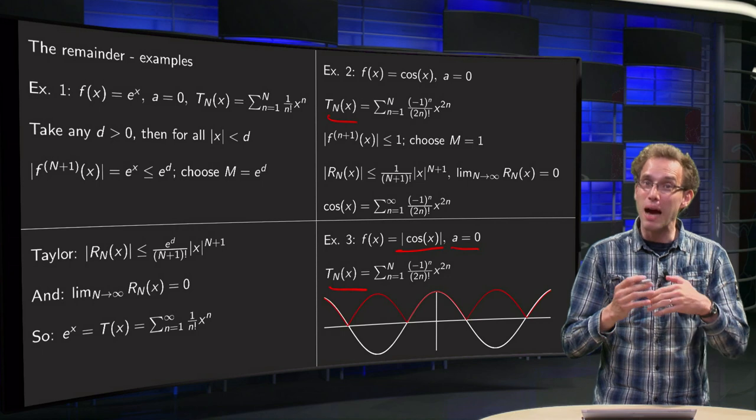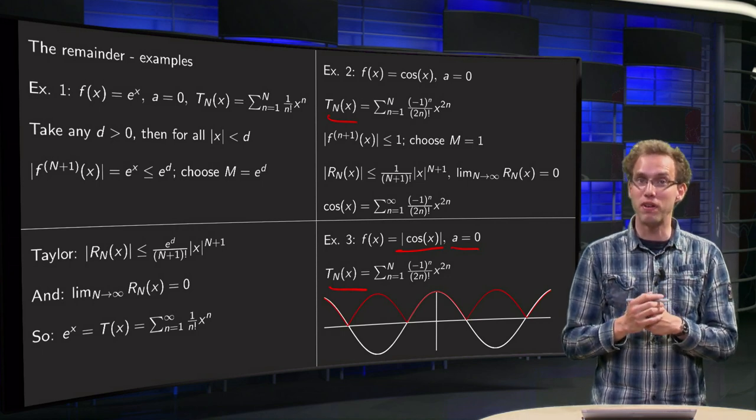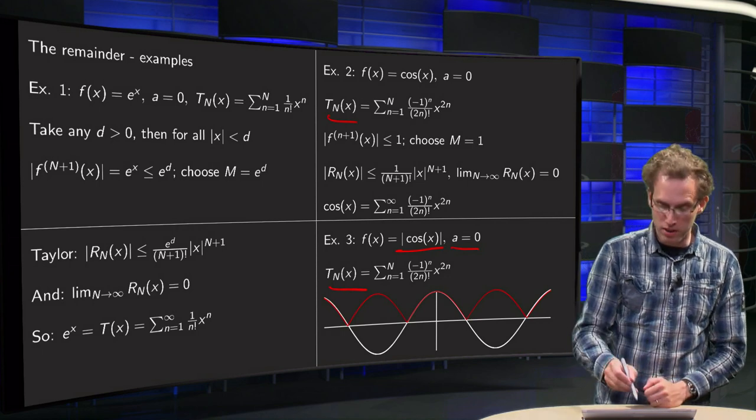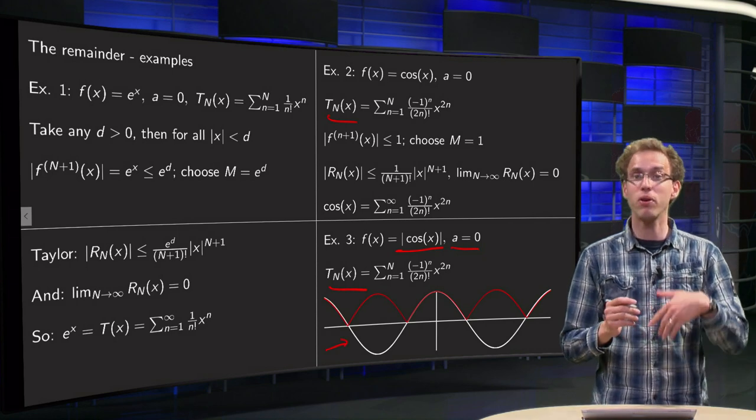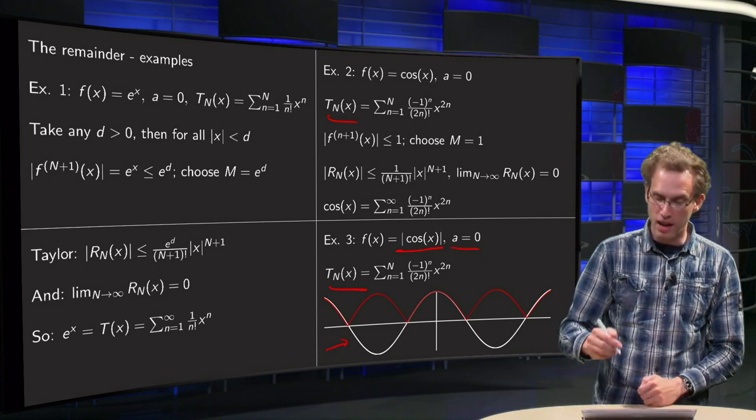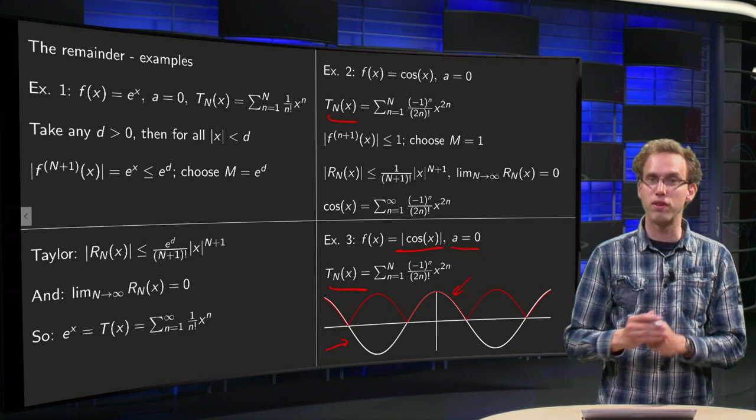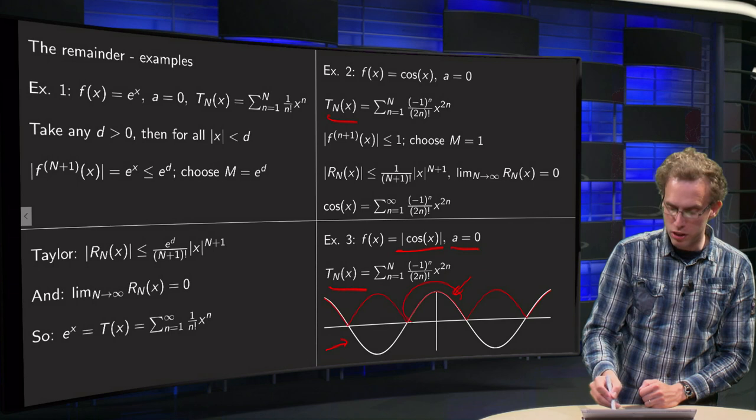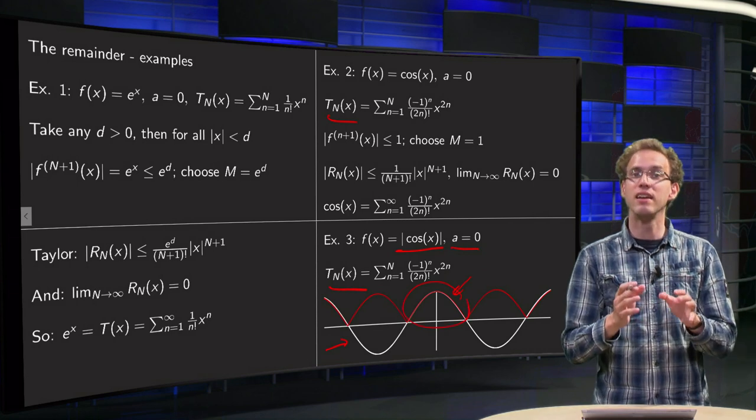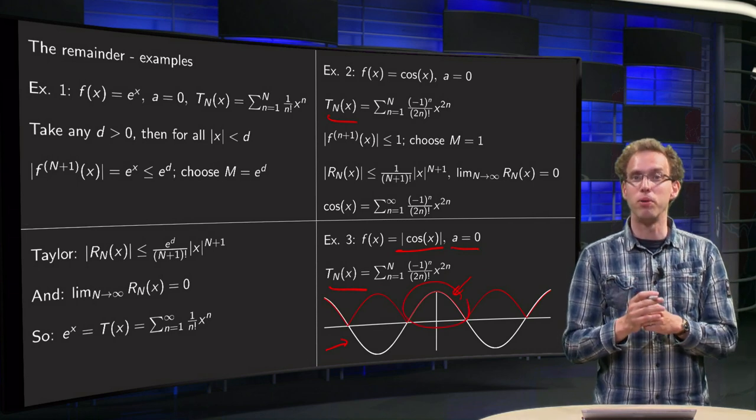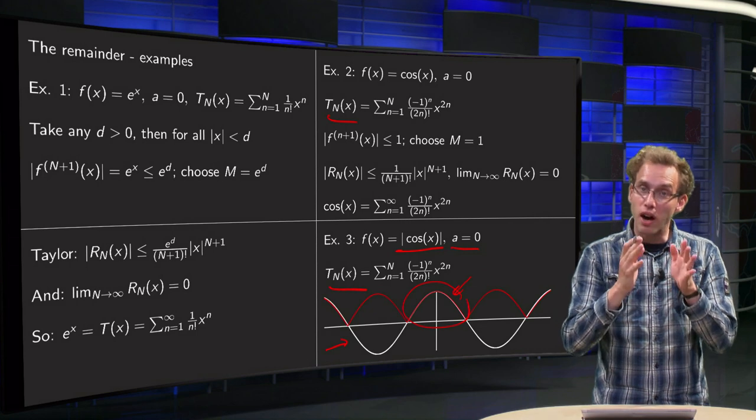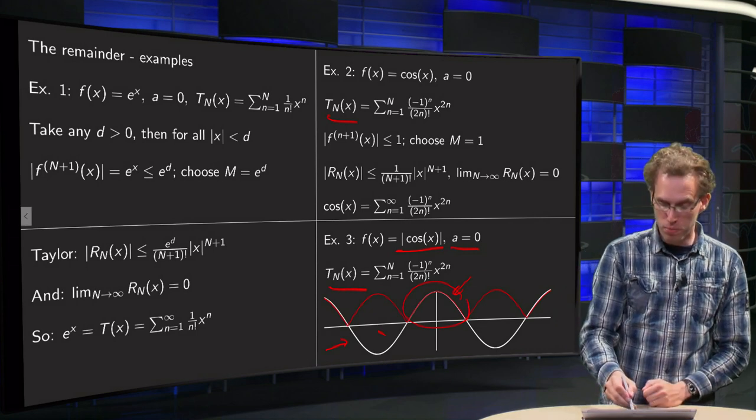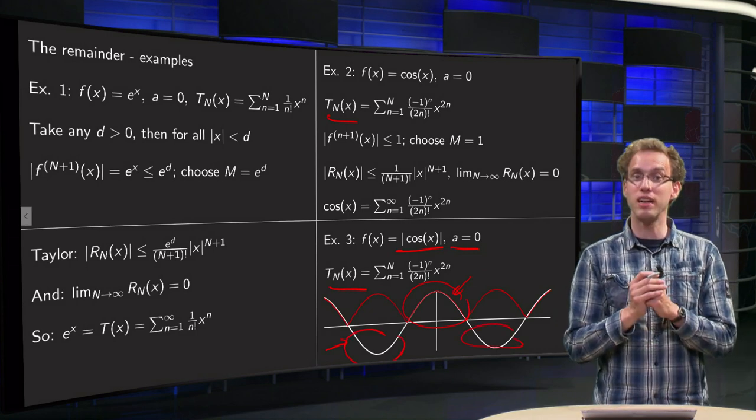But let's see what happens if we plot those in one figure. The white over here is the Taylor polynomial, arbitrarily far as you like, and the red curve is the function absolute value of cosine of x. And you see, at this part you are fine, the Taylor polynomial and the function are the same, but on those parts here, they do not agree anymore at all.